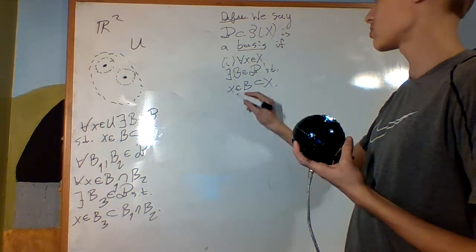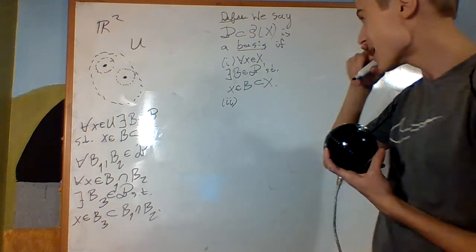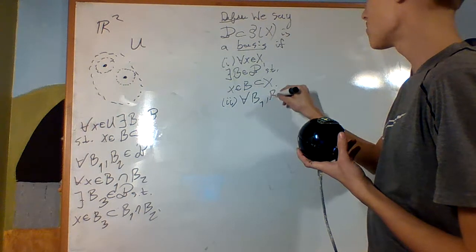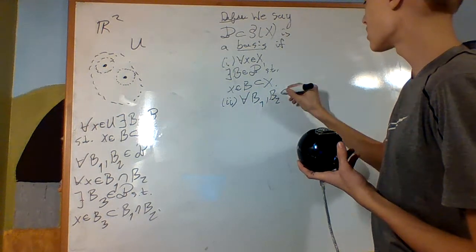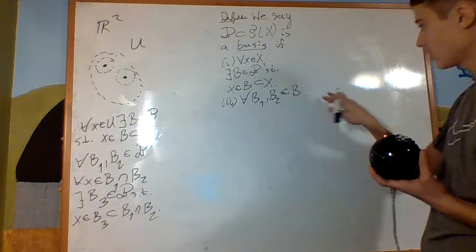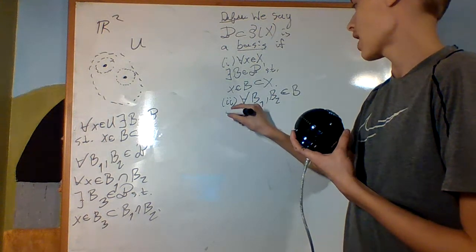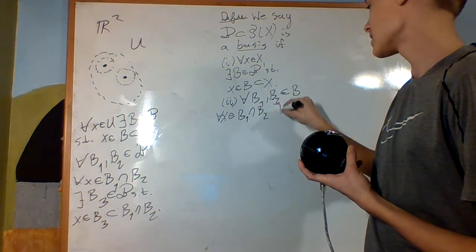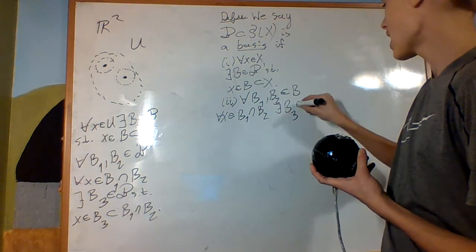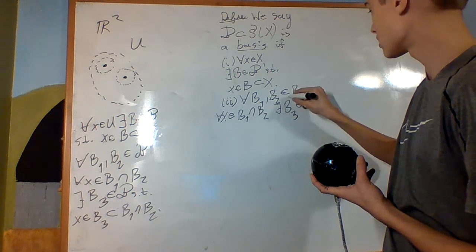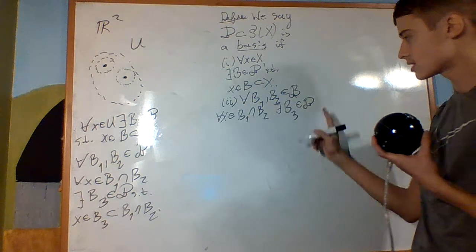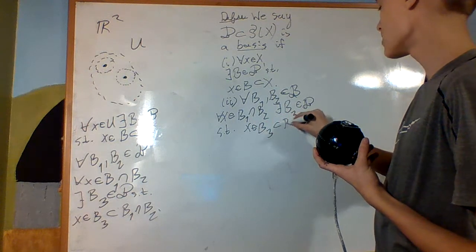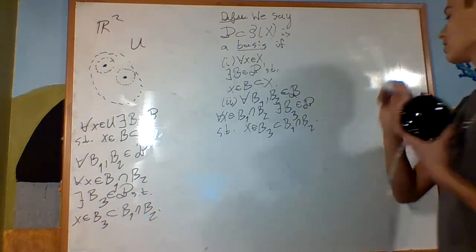We need X to be open, so we have this first requirement. And secondly, for every B₁, B₂ elements of B, and for every x an element of their intersection, there exists a B₃ an element of the basis such that x is an element of B₃, which is a subset of B₁ intersect B₂. These were the requirements that we had.